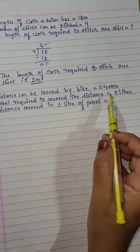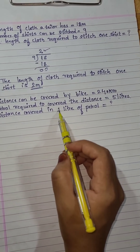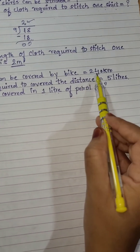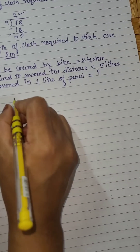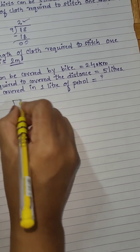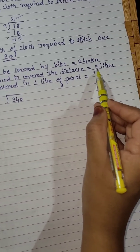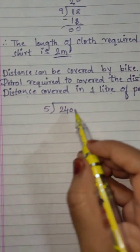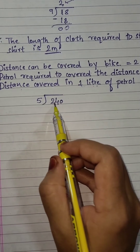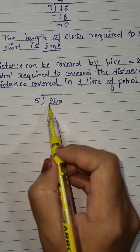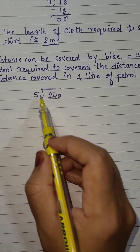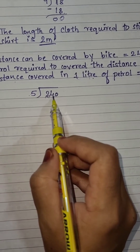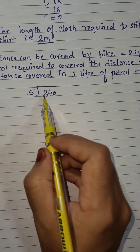Now let us write in division form. We have to do division because we are finding the distance covered in 1 liter. The 240 will be your dividend and the divisor will be 5 liters. It is a 3-digit division. Always start from the highest digit. The first digit is 2, which is less than 5, so you cannot divide. Take one more digit — it becomes 24.